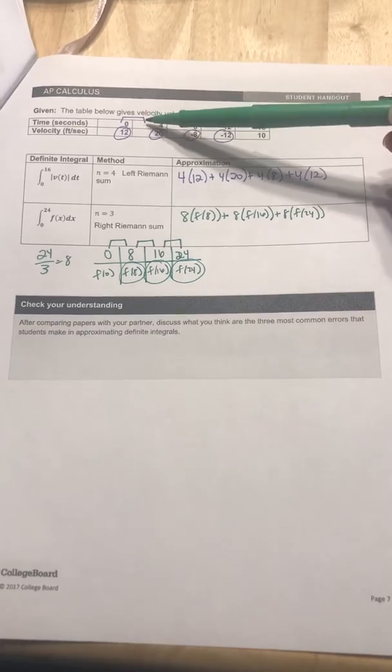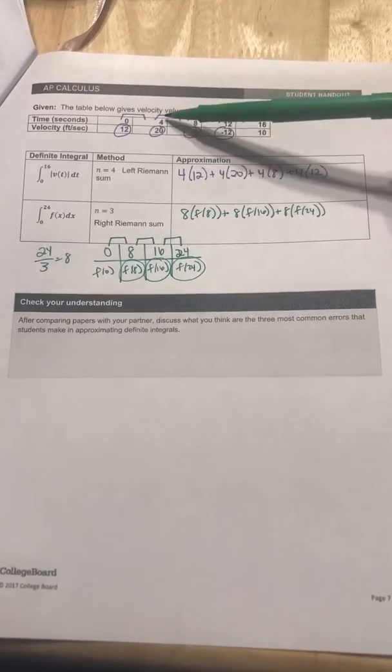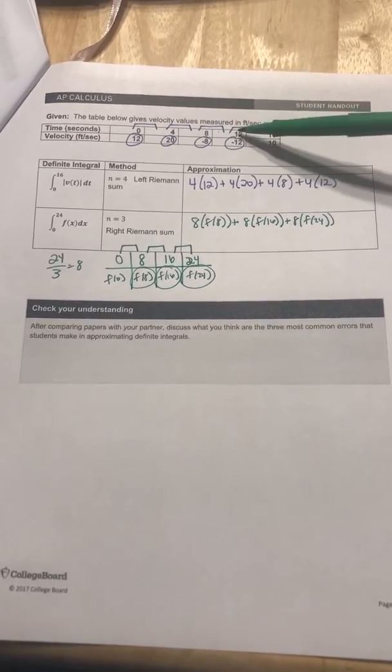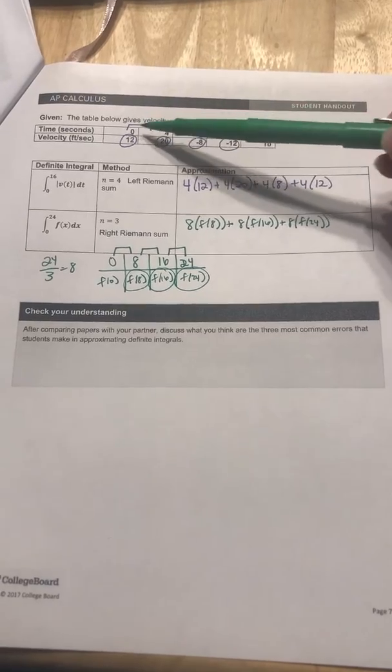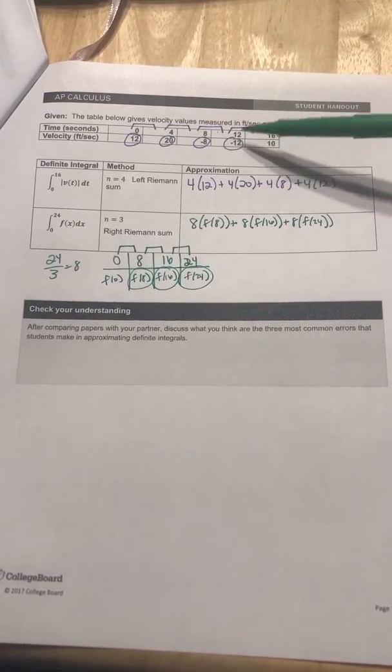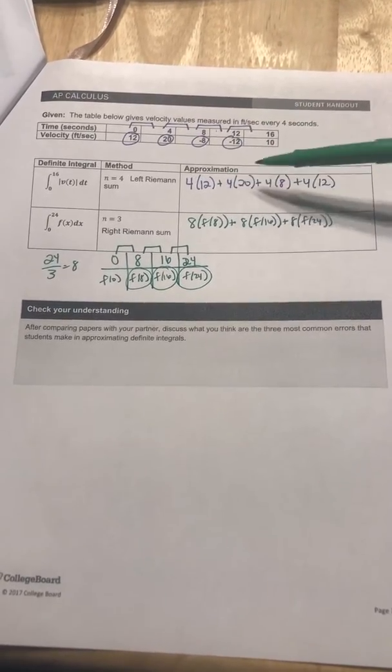So what I do is count four intervals: 0 to 4 would be 1, 2, 3, 4. Now this time it works out nice—they're all four apart. So you're going to have fours for each of these.